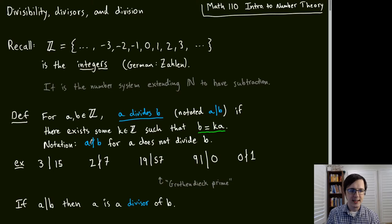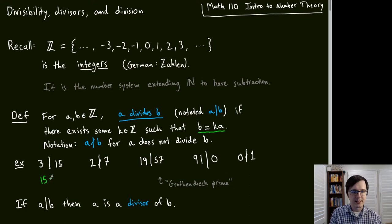Let's look at some examples. 3 divides 15, because we can write 15 = 5 × 3, so K is 5.